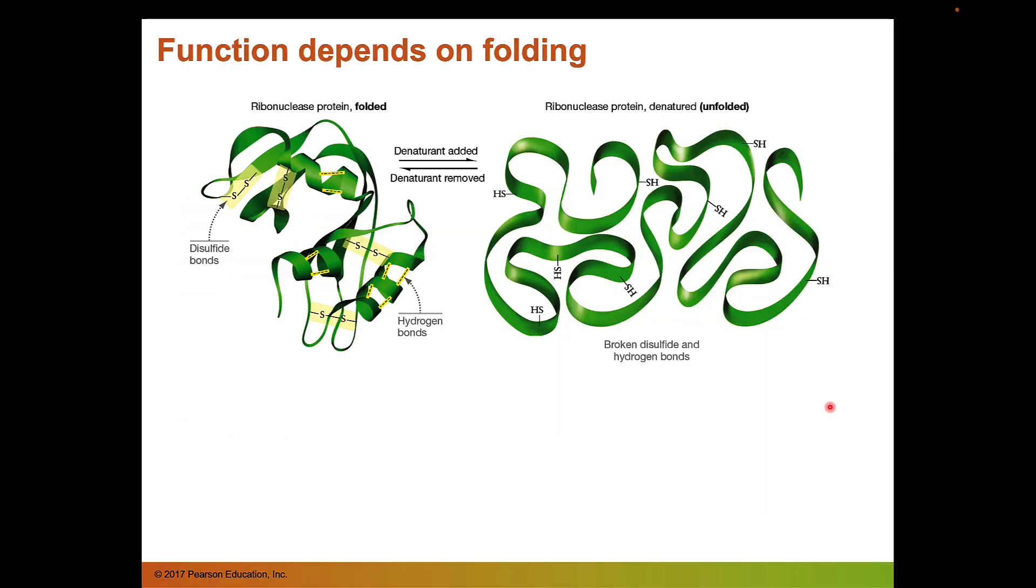I want to show you some experimental evidence that demonstrated that protein folding was necessary for protein function. So these experiments were done a long time ago by Christian Anfinsen and he was studying this protein shown here called ribonuclease. And what this protein did is it degraded RNA. It was a ribonuclease. And so this protein has a lot of disulfide bonds which are shown here, this sulfur-sulfur bond, and a lot of hydrogen bonding.